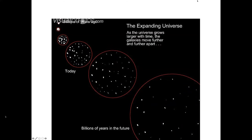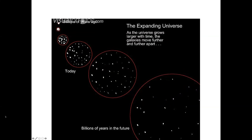This diagram shows how the expansion of the universe looks. Each dot may represent a galaxy. Today they are at a certain distance, but when the universe expanded, the distances between galaxies increased. These distances keep increasing as the universe expands, and they move away from each other. You cannot tell that a particular location is the center — everyone is moving away from everyone. In the future, all these galaxies will be more and more far away from each other.